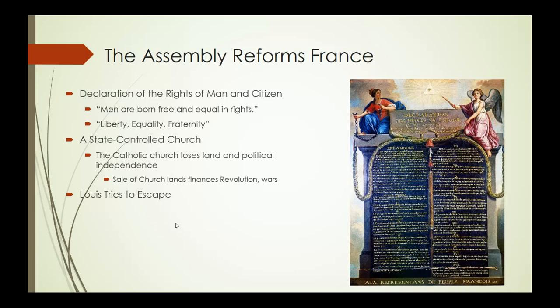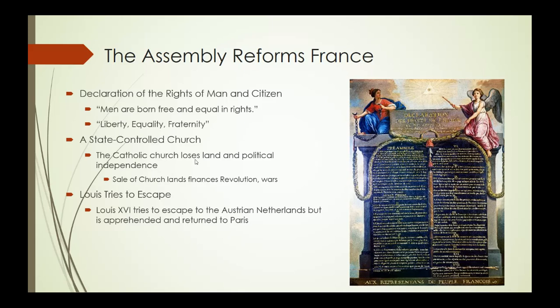It's at this point that Louis and Marie see the writing on the wall. The revolution is becoming so radical that they really need to leave — they need to escape because if they don't, they're probably going to be killed. They attempt to flee to Austria, where Marie Antoinette is from. They are caught and apprehended at the border by a guard who recognizes them. They are brought back to Paris, where they will live for the rest of their lives until they are killed. The question is: once caught, what to do with them?